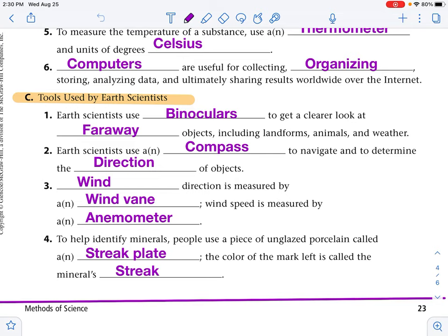To help identify minerals, people use a piece of unglazed porcelain called a streak plate. The color of the mark left is called the mineral's streak. So porcelain, what you might think of porcelain. Look at the inside of your sink or your sink in your bathroom. That might be porcelain or now that would be glazed, not unglazed. Think about maybe a coffee cup that might be in your pantry or your cabinet. That might be porcelain. Okay.